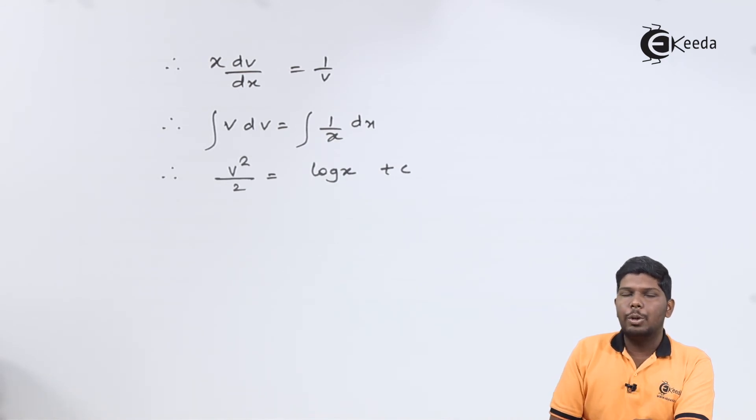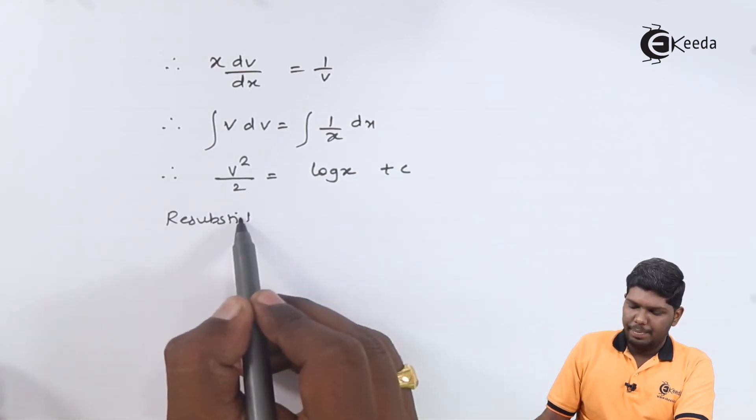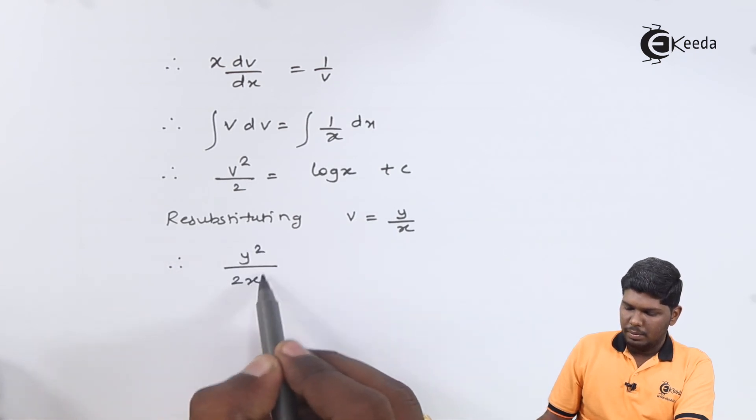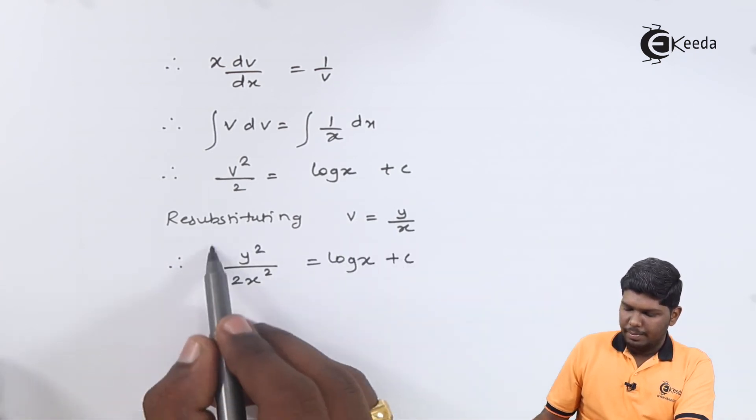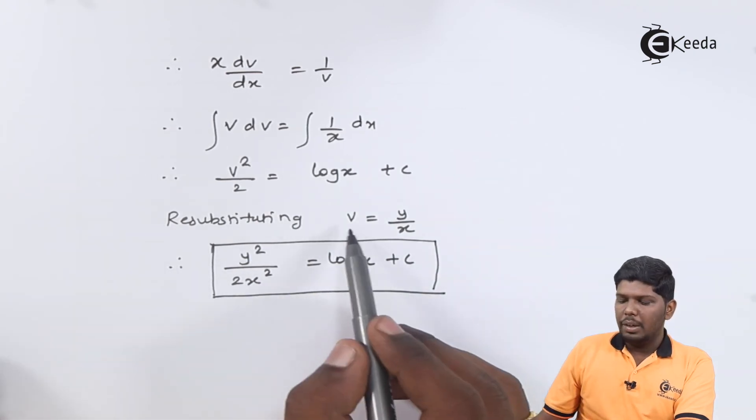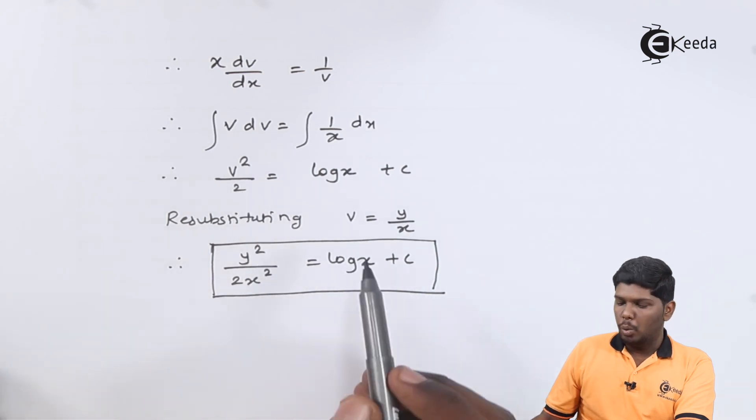So after resubstituting v as y/x, we have y²/(2x²) = log x + c. This is our final answer. I hope friends you have understood this problem. Thank you for watching this video.